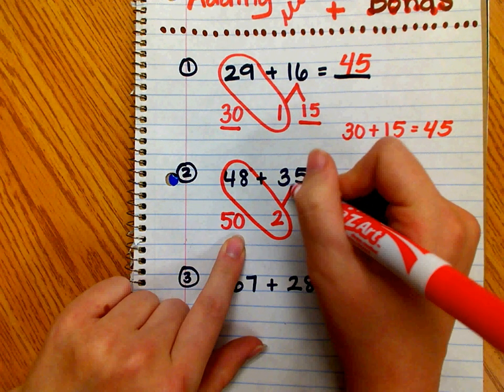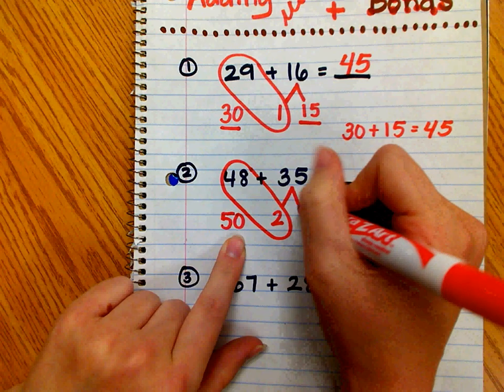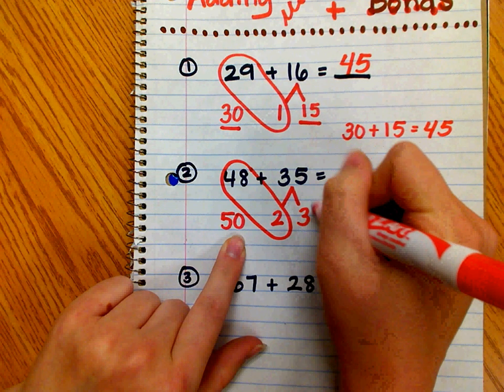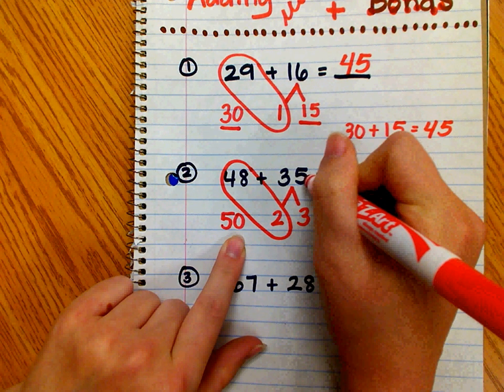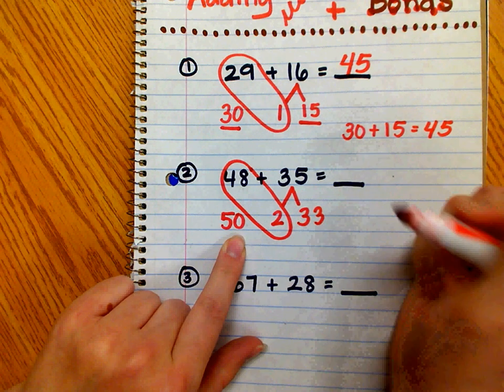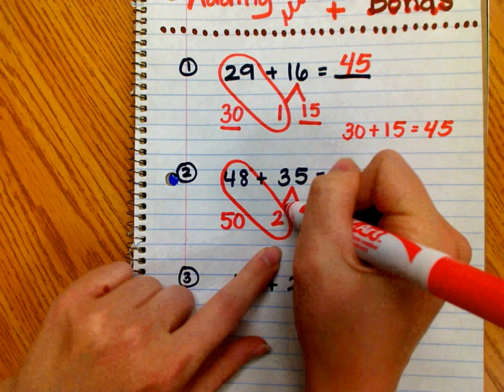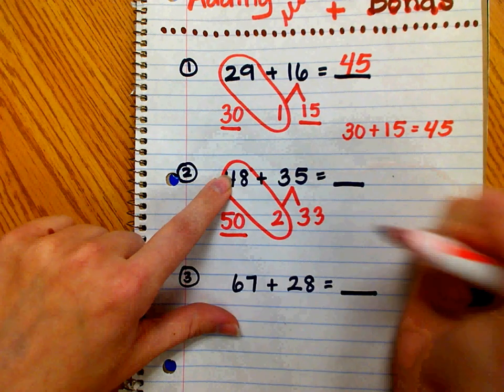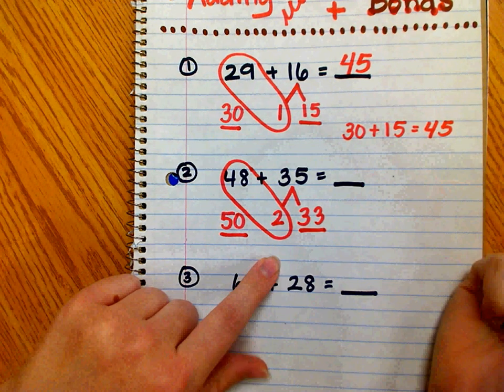If I take 2 ones from 35, I'll be left with 3 tens and 3 ones, because 5 ones minus 2 ones equals 3 ones. So 35 gave 2 to 48 to make 50, and it had 33 left.